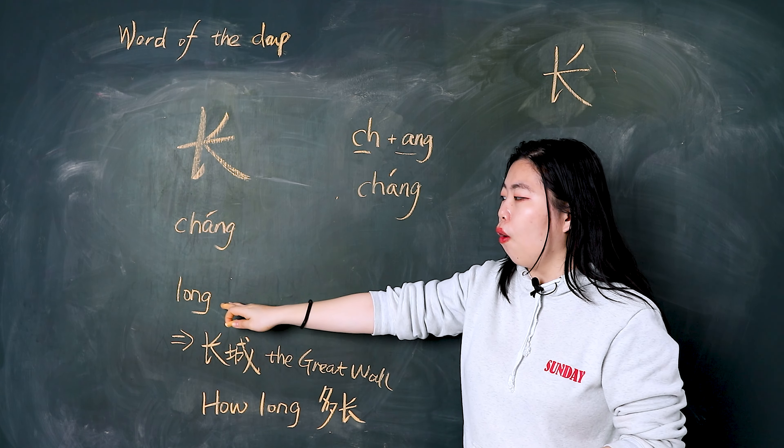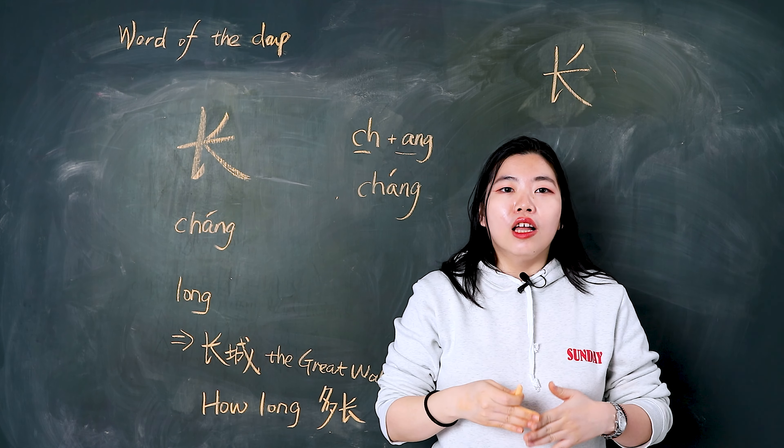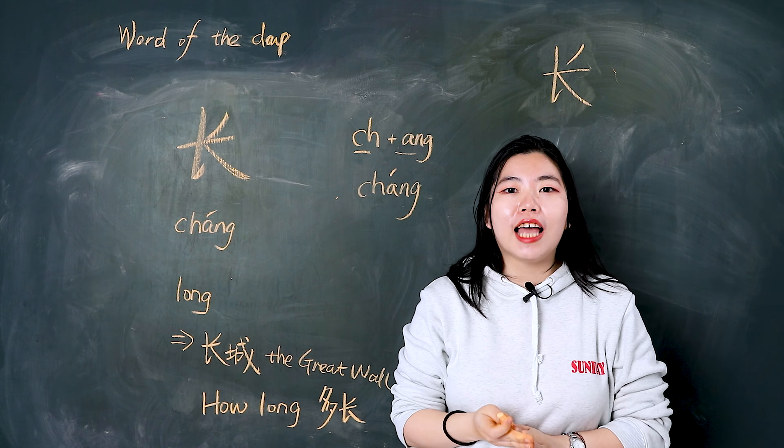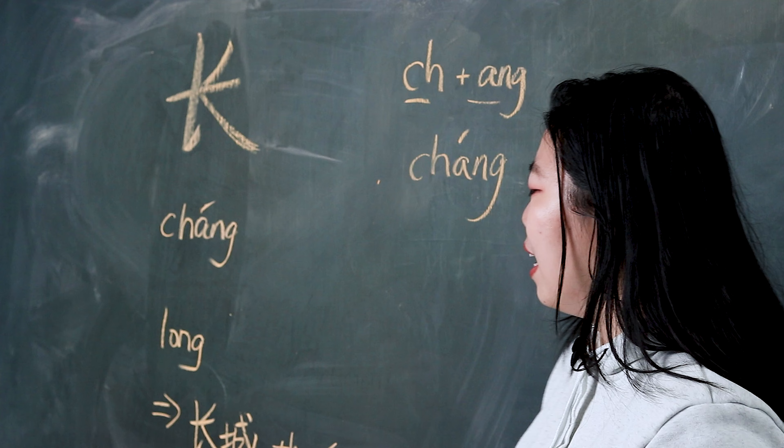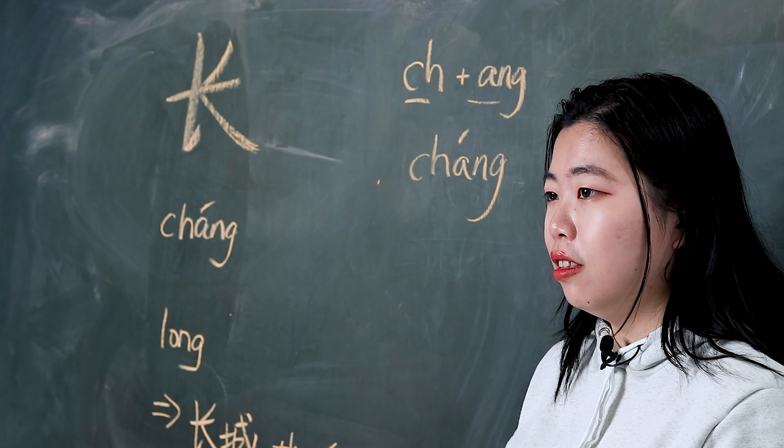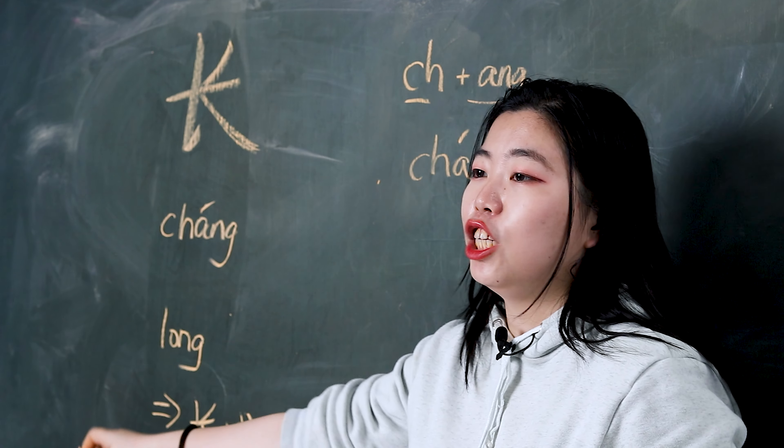长 means long. For example, this river is very long: 这条河很长. Pay attention, the Great Wall is called 长城 in Beijing.